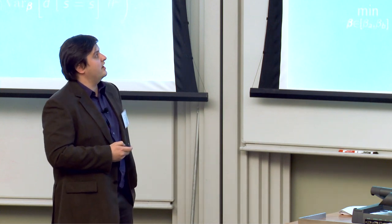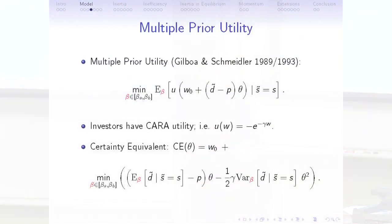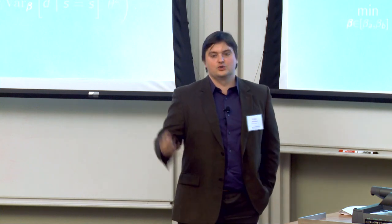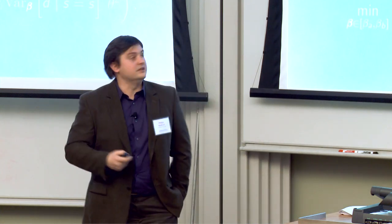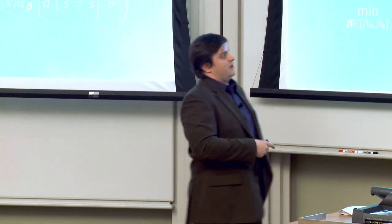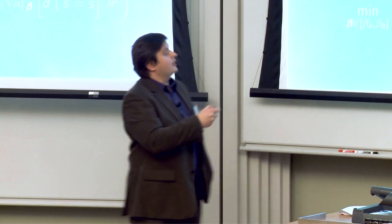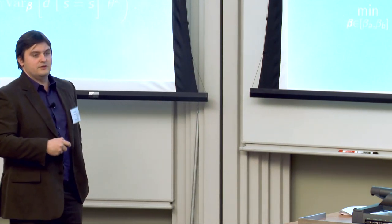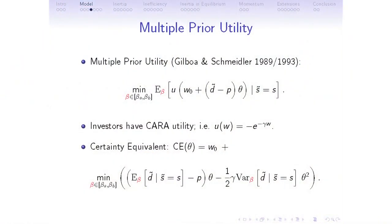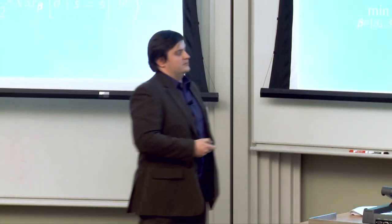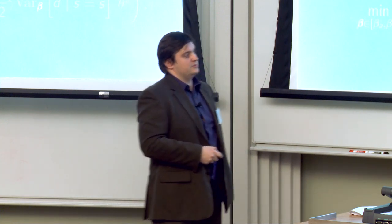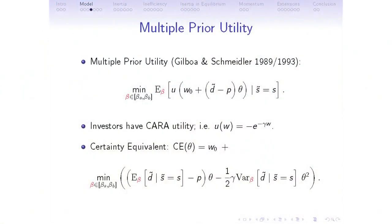Continuing with preferences: it's multiple-prior utility. The agent maximizes the minimum over the set of betas of the expected utility of future wealth, conditional on the signal received. We assume investors have CARA utility — gamma is the coefficient of absolute risk aversion. Maximizing utility is then equivalent to maximizing the certainty equivalent: the posterior mean minus the price times demand, minus one-half gamma times the residual variance times demand squared. We must consider the worst-case scenario.